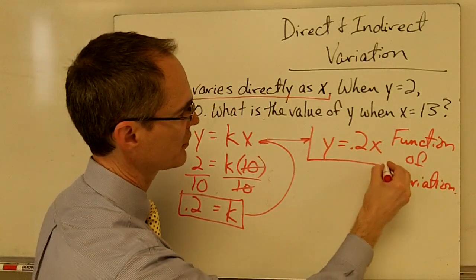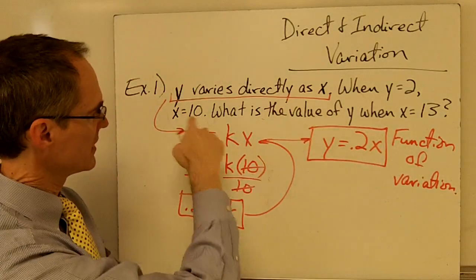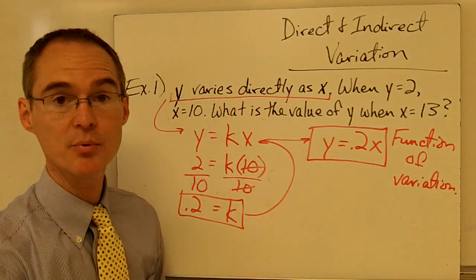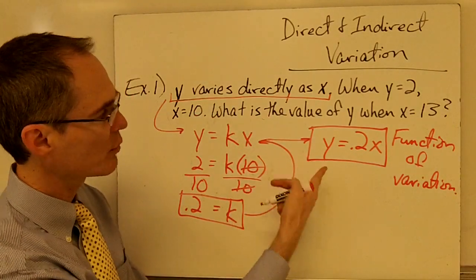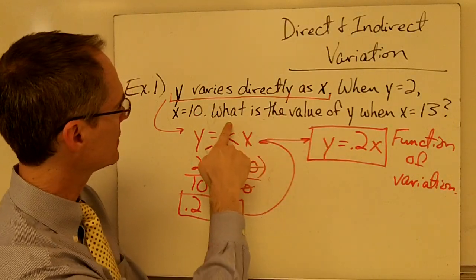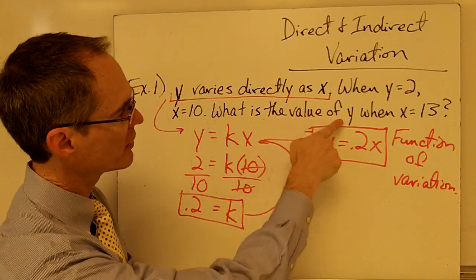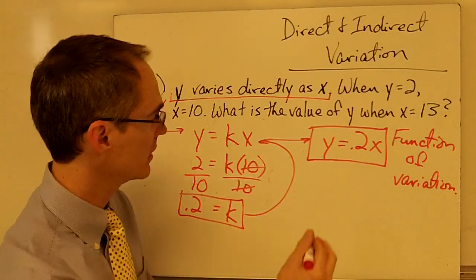this is called the function of variation. In other words, this function right here, it kind of defines this problem. So now that I know what my function of variation is, it's very easy to answer this question.